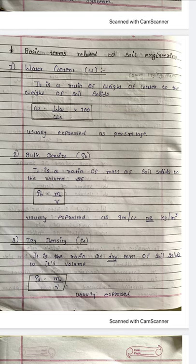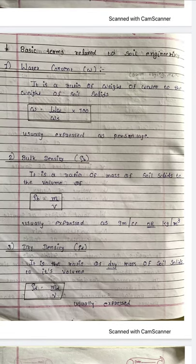Most important is the notation. Now, the next topic is basic terms related to soil engineering. You will remember these terms throughout your entire journey in soil engineering. We will start with the first term: water content, small w. Water content is nothing but the ratio of weight of water to the weight of soil solids, multiplied by 100.